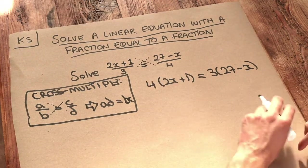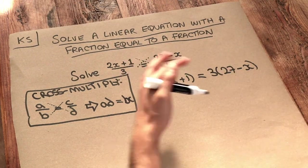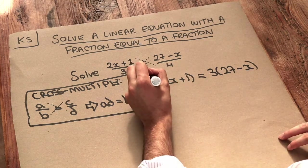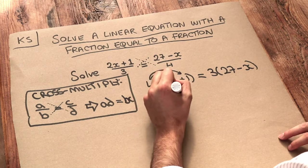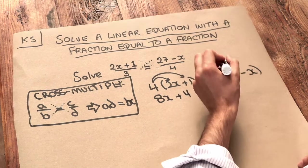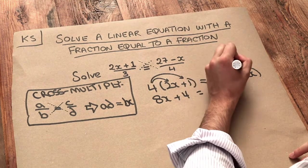At this point we've got brackets, so I want to expand them out. We do 4 times 2x and 4 times 1, which gives us 8x plus 4. Then we want to do 3 times 27 and 3 times minus x.